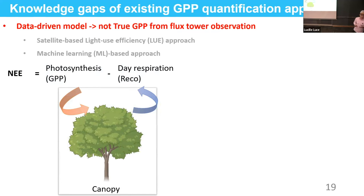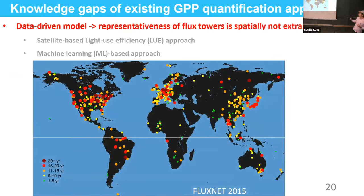Although this data-driven model is very powerful, there are drawbacks. The GPP measure is not the true GPP from tower observations — the flux tower measures NEE, the net value of photosynthesis and respiration at daytime, where respiration contains contributions from leaf, stem, soil, and roots. The NEE is then partitioned into these two terms by algorithm, with potential errors in this process. Also, flux tower sites are very dense in areas like the US, Europe, or Eastern Asia, but relatively sparse in important areas like tropical Africa. The representativeness of flux towers is not spatially extrapolable when data is upscaled from site to global level.